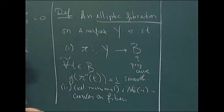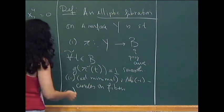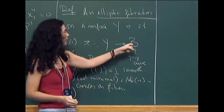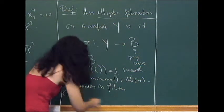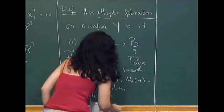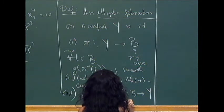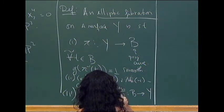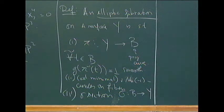Finally, I might want this fibration to have a section — a morphism σ from B to Y such that when composed with π, gives the identity map on B. That's what an elliptic fibration on a surface Y is.